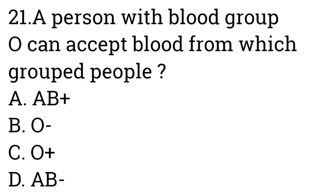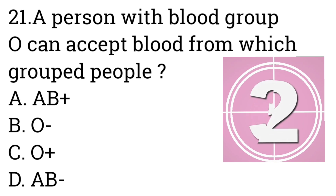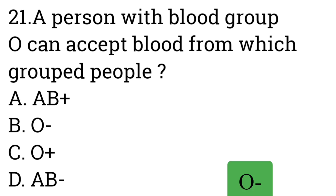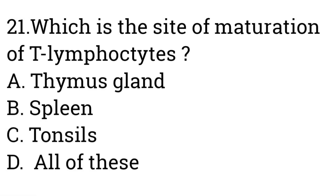Question number twenty-one: A person with blood group O can accept blood from which group? Option A: AB positive, B: O negative, C: O positive, D: AB negative. Answer is O negative. O negative is the universal donor — it can give blood to everyone but can only accept from other O negative donors.